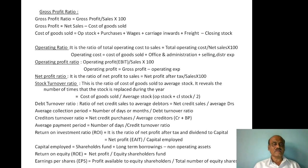To summarize, the investment-based profitability ratios include: Return on Investment Ratio, Return on Equity Ratio, and Earning Power Ratio. These ratios collectively measure the profitability and efficiency of a business from the perspective of investment.